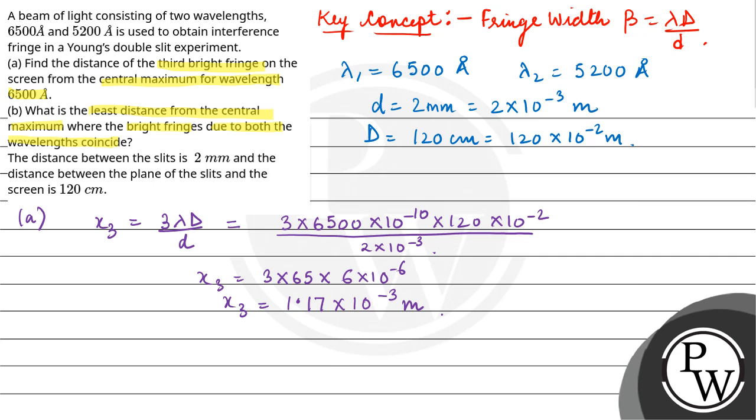Now in part b, we need to find the minimum distance from central maxima where the bright fringes due to both wavelengths coincide. So for lambda 1, its nth fringe...